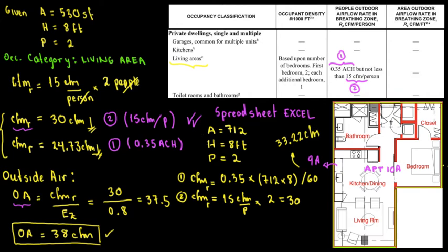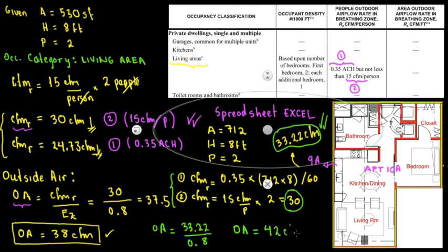From these two in this new example, the highest is based on the 0.35 air changes per hour, which is 33.22. That is higher or greater than 15 CFM per person. So we choose this. In other words, the outside air is going to be 33.22 divided by the distribution effectiveness, 0.8. The outside air would be 33.22 divided by 0.8, that's 41.50. Let's round it up to 42 CFM. So if we do 42 CFM, we're going to comply with the International Mechanical Code.